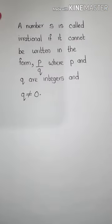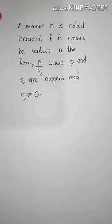Can you tell me some examples of irrational numbers? Root 2, root 3, root 5, root 7 etc. Today we are going to prove that root 2, root 3, root 5 etc. are irrational numbers. A number S is called irrational if it cannot be written in the form P by Q, where P and Q are integers and Q is not equal to 0.